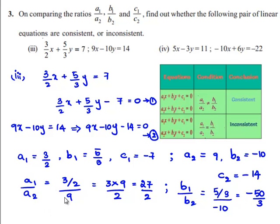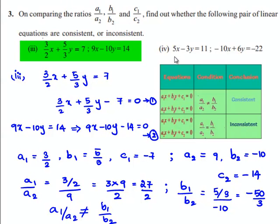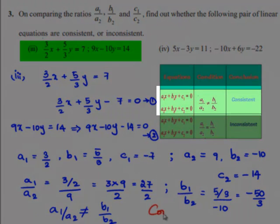So the value of a1/a2 is 27/2 and the value of b1/b2 is -50/3. Therefore, a1/a2 is not equal to b1/b2. We can conclude that the given set of linear equations 3/2x + 5/3y = 7 and 9x - 10y = 14 are consistent.